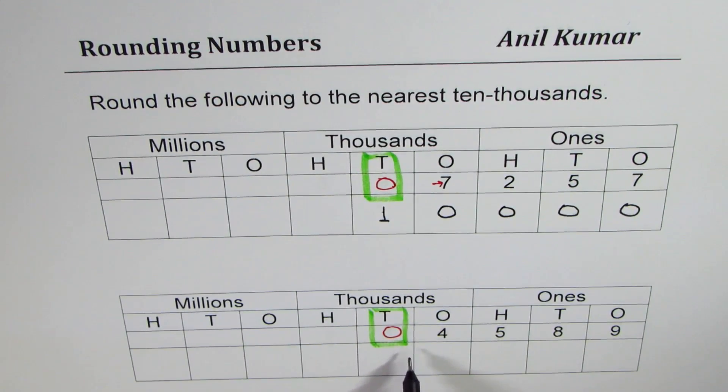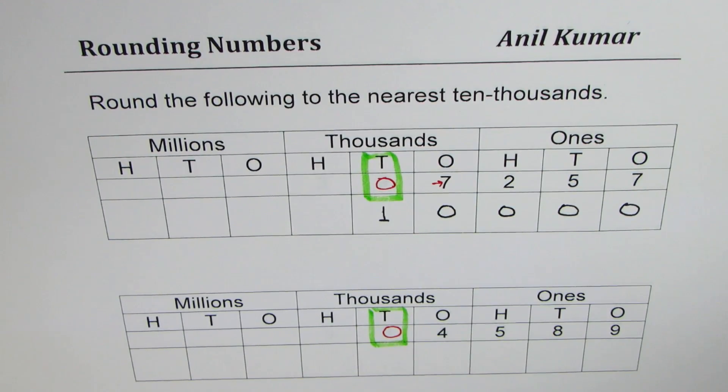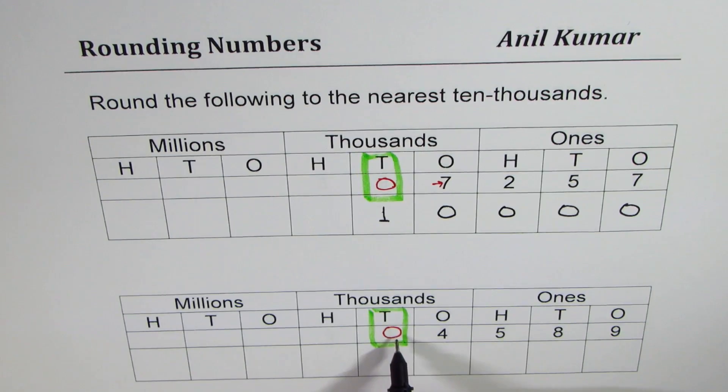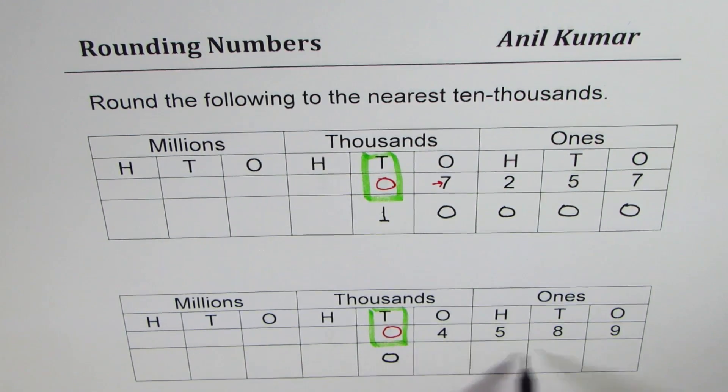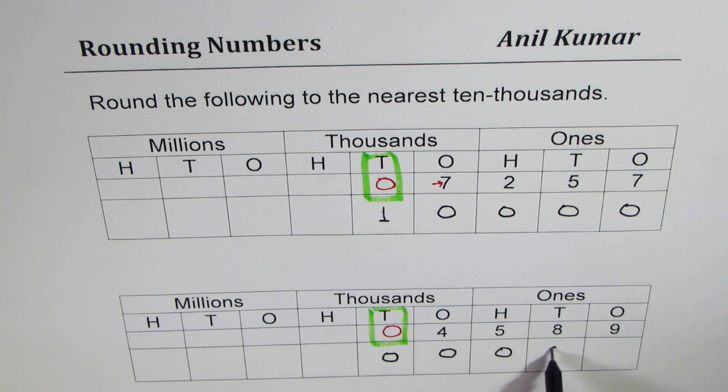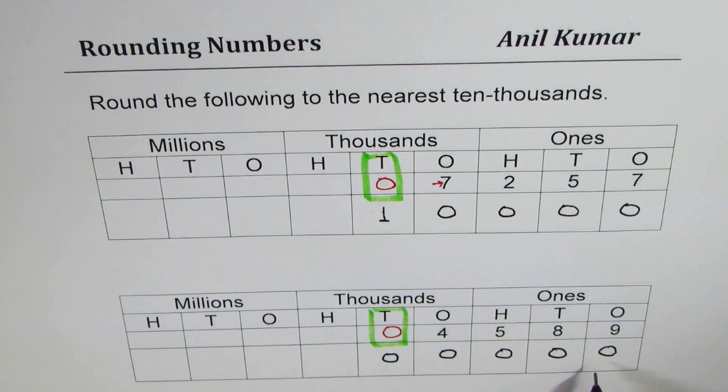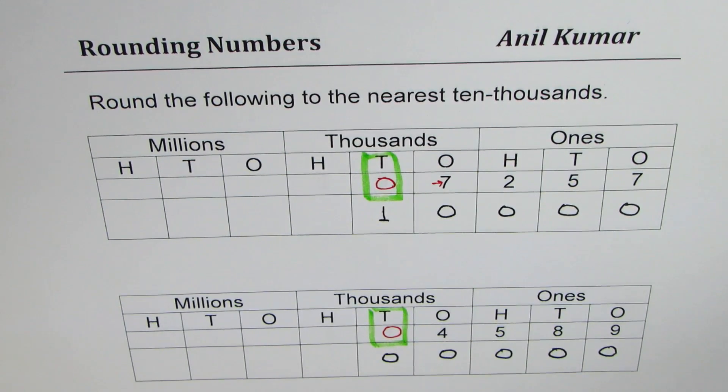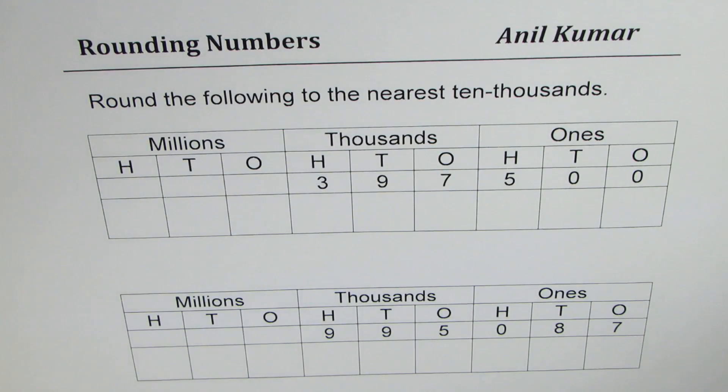Now here in the second example, tell me what is to be done. You can pause the video, answer the question and then look into my solution. Well, we have placed zero at 10,000. Number to the right is less than five. So it remains zero. And all other numbers should be zero. So it rounds to zero. So when you are rounding to 10,000, there are situations where the answer could be zero. Numbers less than 5,000 will round to zero. So I hope you understand this concept.